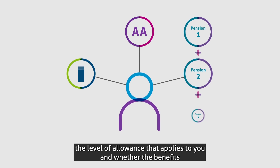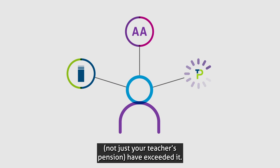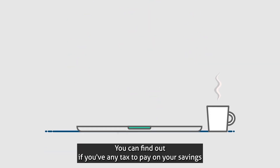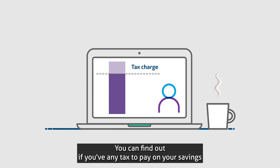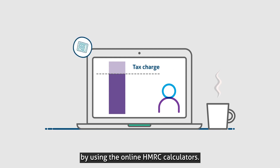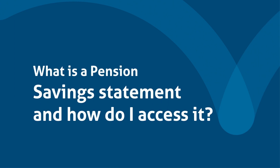What are my responsibilities? It's your responsibility to check if you were affected by the annual allowance, the level of allowance that applies to you, and whether the benefits you've built up during the year in any pension scheme — not just your Teachers' Pension — have exceeded it. You can find out if you have any tax to pay on your savings by using the online HMRC calculators.